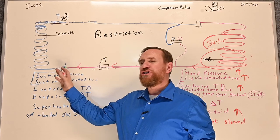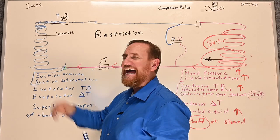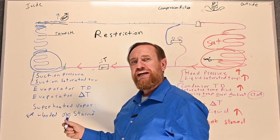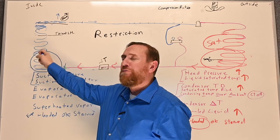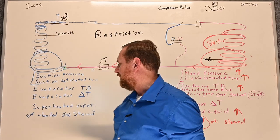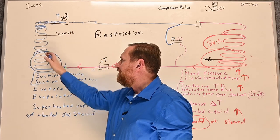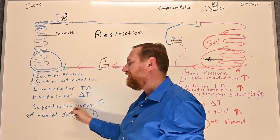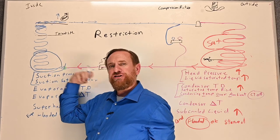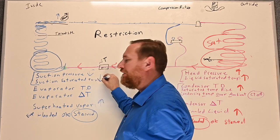On the evaporator side, because we're restricting refrigerant flow, it's not getting to the evaporator coil — we have the opposite effect. We don't have enough liquid refrigerant, so we end up with less saturation there. Less saturation means the refrigerant boils away very fast, so superheat goes up. Too much superheated vapor means not enough liquid saturation mixture — the evaporator coil is starved. Because there's less refrigerant in the evaporator coil, we end up with a lower suction pressure, which also means a lower saturated temperature.